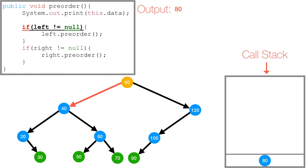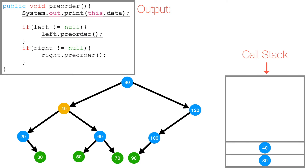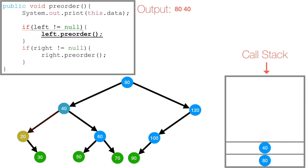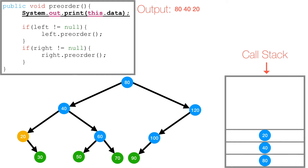Then I check if 80's left subtree is not equal to null. Since it's not null, I call preorder on its left subtree. 40 gets pushed to the call stack, and I print the data associated with the current node, which is 40. Then we check if 40's left is not equal to null. Since it's not null, I call preorder on 40's left subtree. So 20 gets pushed to the call stack, and I print the data associated with the current node, which is 20.